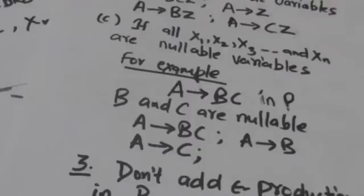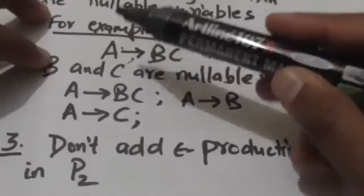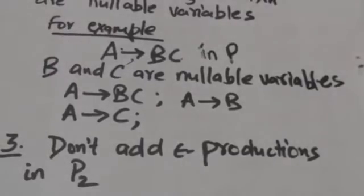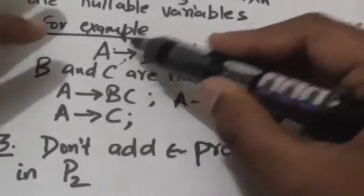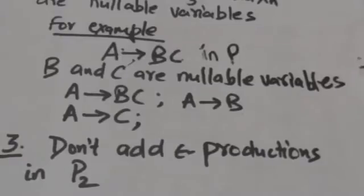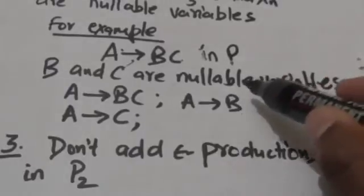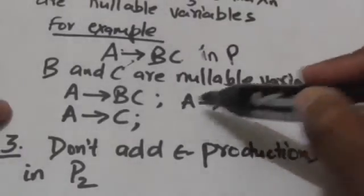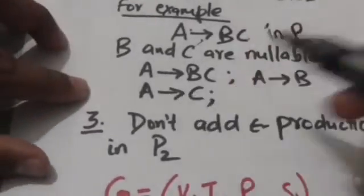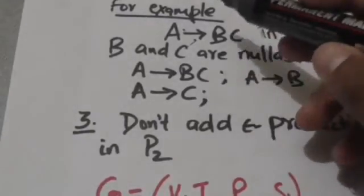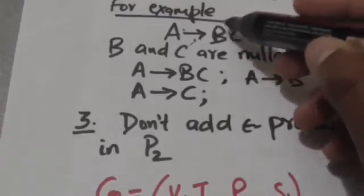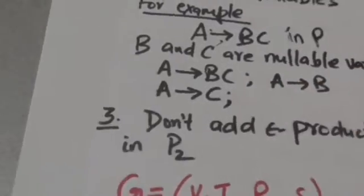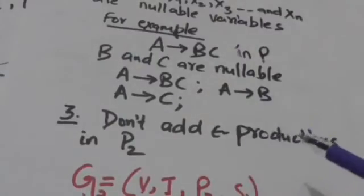For another example, if there is a production A → BC in set P where B and C are nullable variables, then add A → BC to set P2. Also add A → B, obtained by removing the nullable variable C from the right-hand side. Also add A → C, obtained by removing the nullable variable B from the right-hand side. Do not add any empty production to set P2.